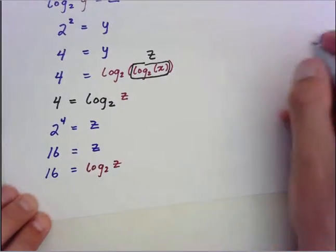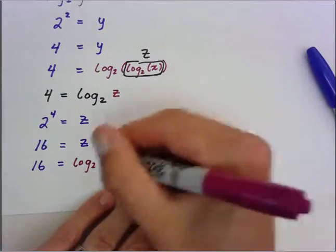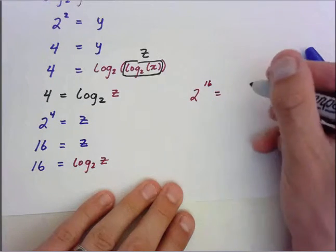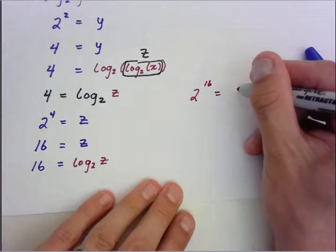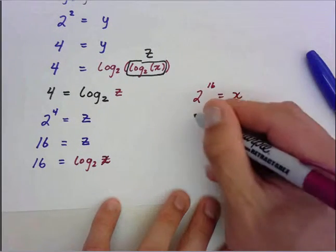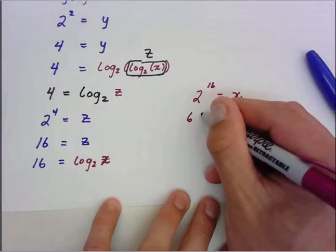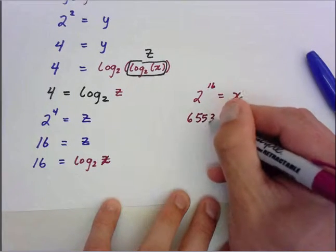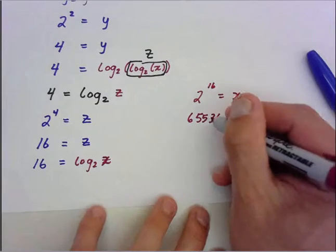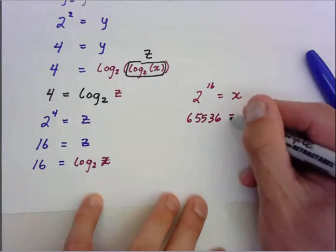So what we can do, again, is apply that same rule and say, well, 2 to the 16th power is x. So 2 to the 16th is 65,536, I believe.